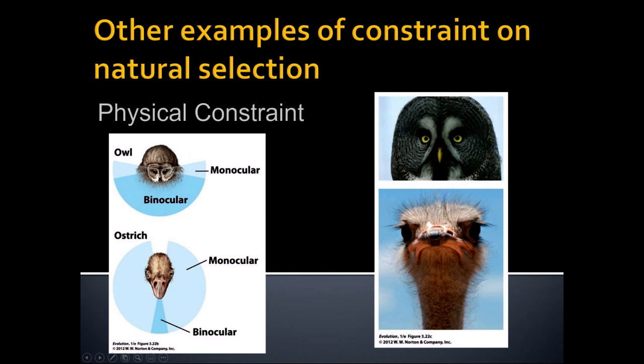Here are some physical examples similar to antagonistic pleiotropy — physical constraints. Bilaterally symmetrical organisms like vertebrates often have paired sensory organs. Eyes are a great example: in humans and owls, the eyes are close together in the front of the face, which provides great binocular vision. But the trade-off is a very large blind spot — we can't see behind us. For the owl and humans, that's been an advantage, so we've selected for eyes close together in the front.